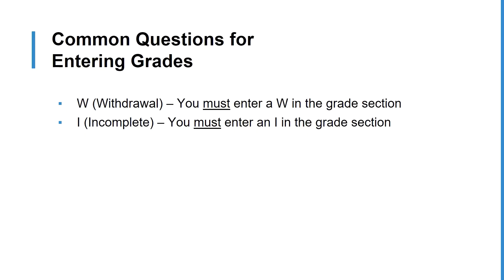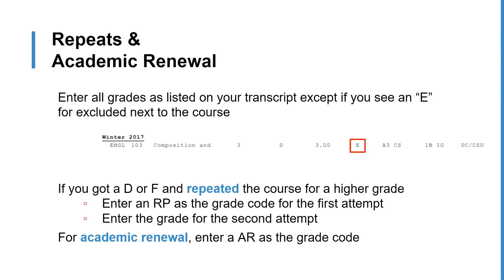Here are some examples of questions we often get regarding your grades. If you have a W, or withdrawal, on your transcript, you must enter a W in the grade section. The same goes for an I, or incomplete. There are some situations where a course may be excluded from your transferable GPA, either due to repeating the course or completing academic renewal. For these courses, if you see an E next to the class on your transcript, that means you may need to enter a different grade code.